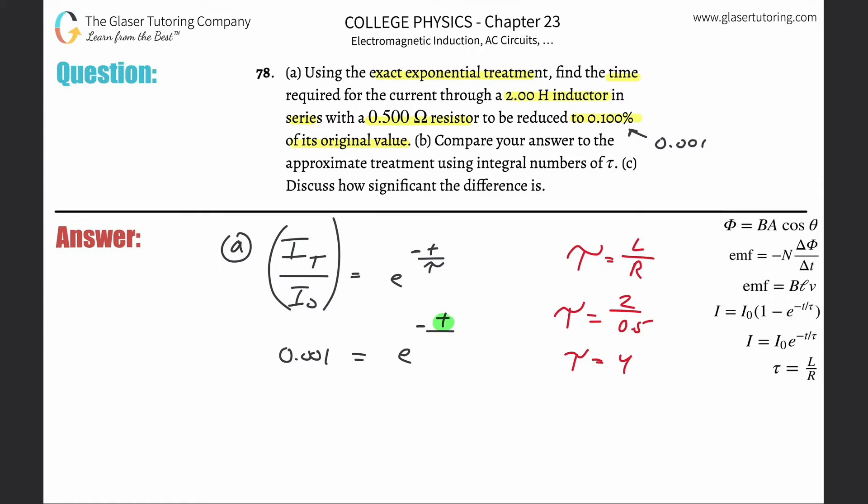Now to get rid of the e, as we had stated before, use the natural log of both sides. Natural log will cancel that e, so this thing gets brought down to become a normal line item. Now you can plug in ln of 0.001 in the calculator, and that works out to be negative 6.908. Notice the negatives will cancel, so simply just erase them.